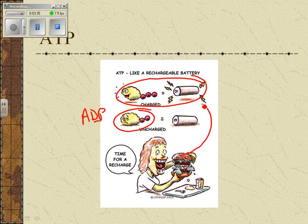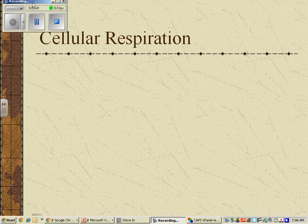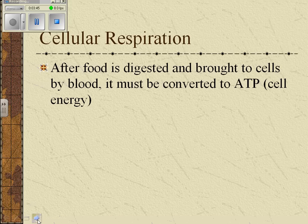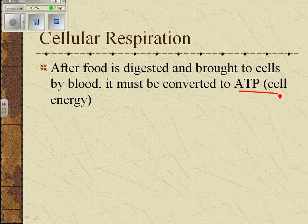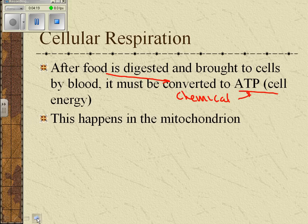What we want to talk about today is how that happens in a little bit of detail. The process by which that happens is called cellular respiration. Cellular respiration is also called internal respiration. After your food is digested and brought to cells by blood, it must be converted to ATP. What this really means is that we have to break the food apart, break the molecules apart, and convert the chemical energy in the food to ATP. And this happens in the mitochondrion.